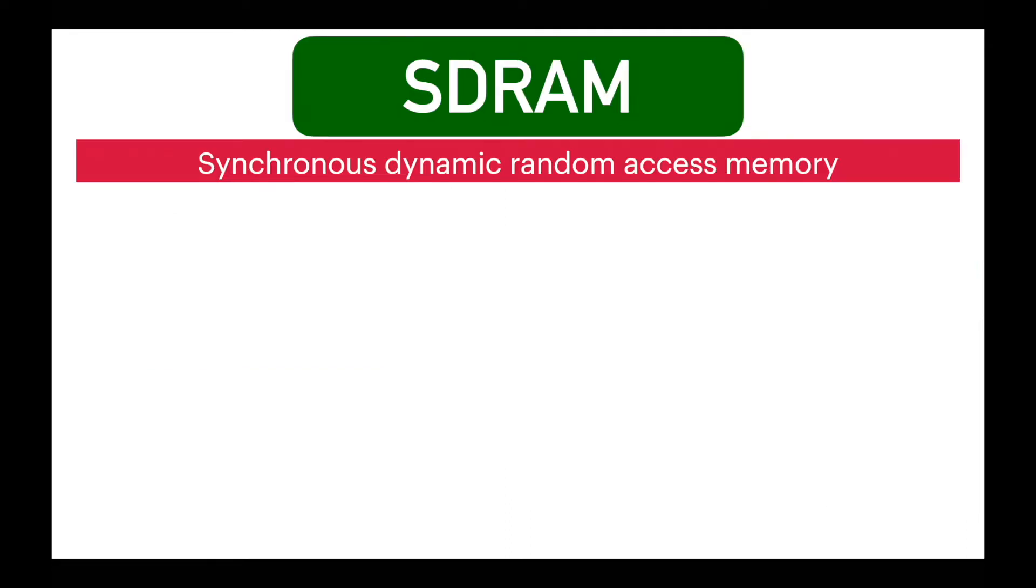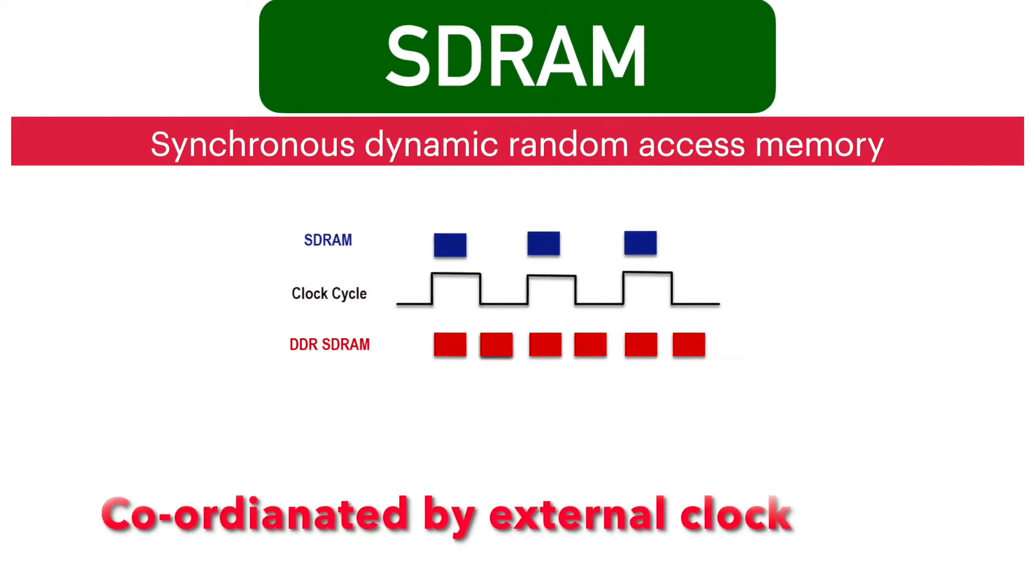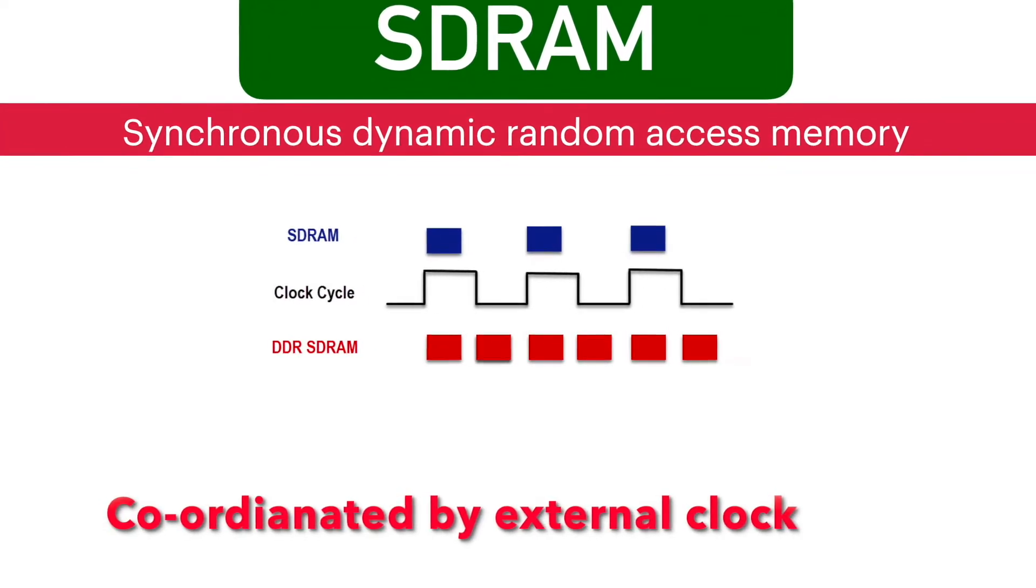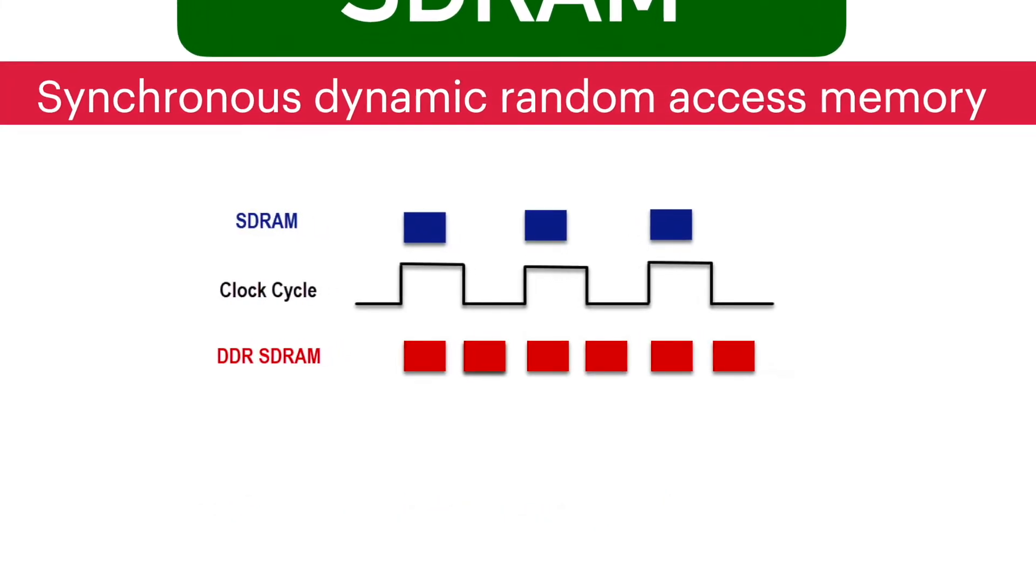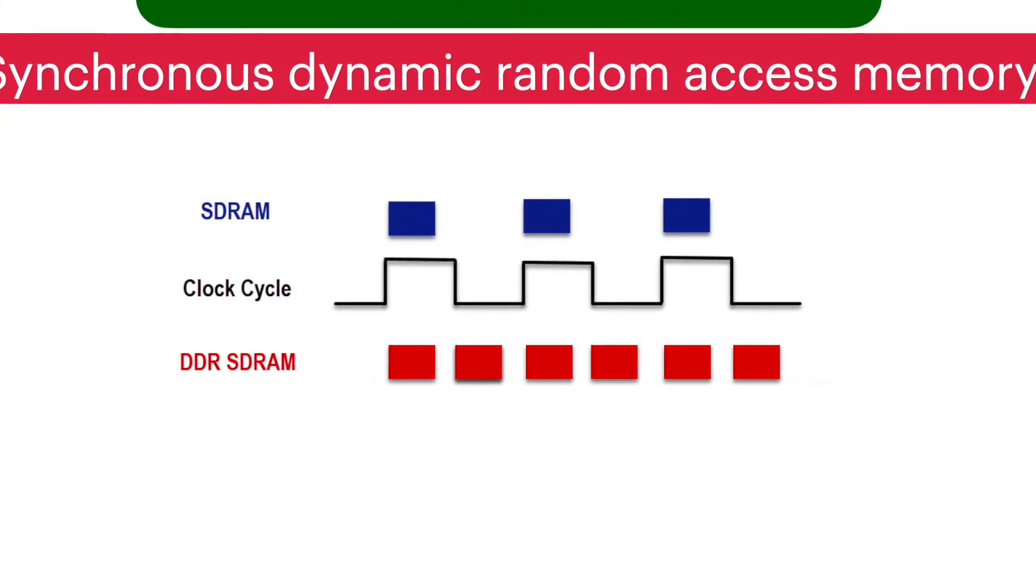Synchronous dynamic random access memory, SDRAM, is kind of DRAM, where the operation of its external pin interface is coordinated by an externally supplied clock signal. You can see SDRAM and DDR data in the diagram with respect to clock pulse.